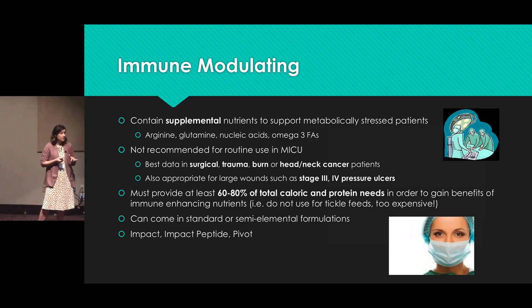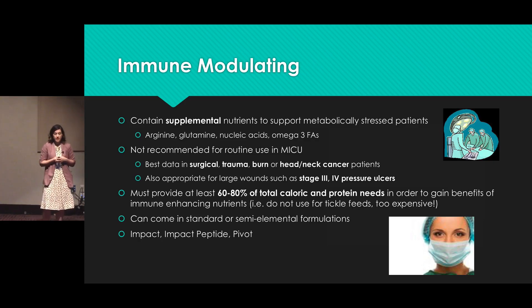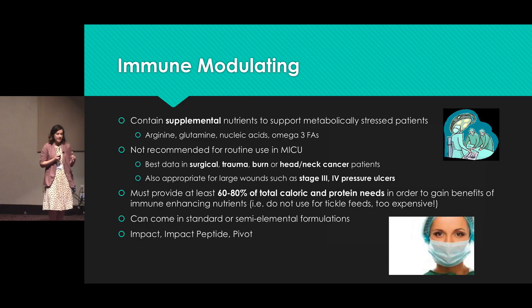Immune modulating formulas can come in a standard formula or they can also be elemental or semi-elemental. Some examples would be Pivot, Impact, or Impact Peptide.